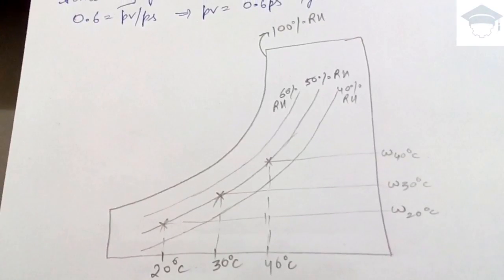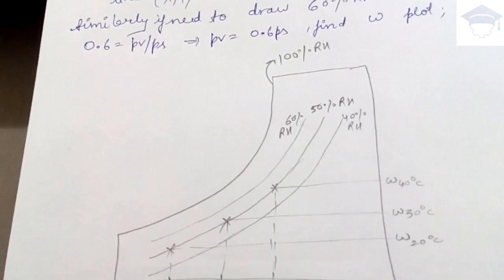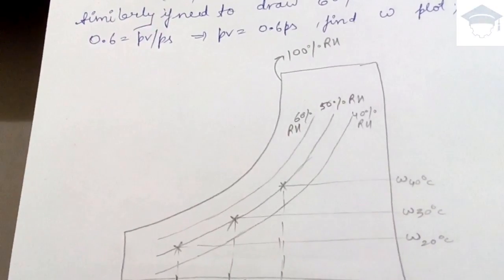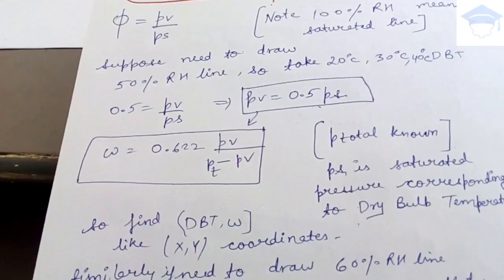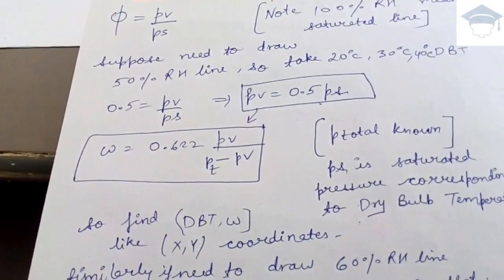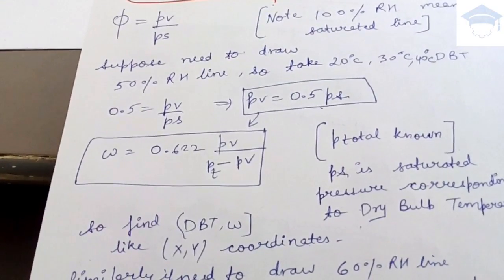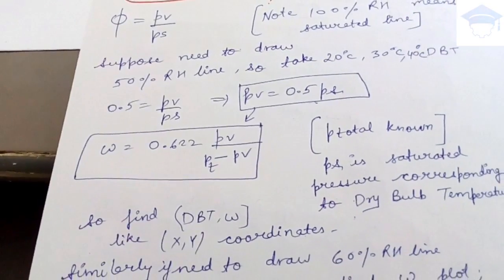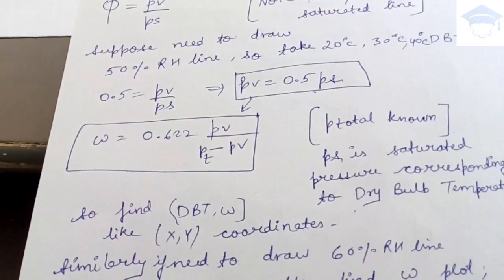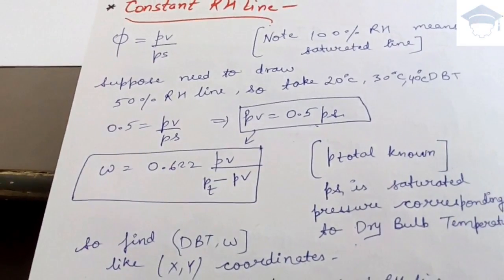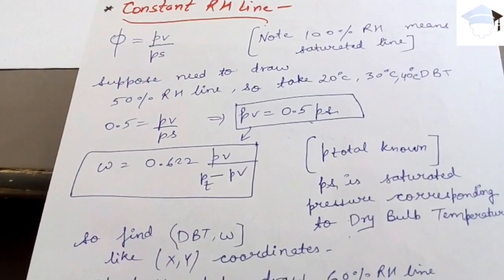To summarize: to draw a 50% RH line, take three dry bulb temperatures. For each temperature, use 0.5 = PV / PS to find PV = 0.5 × PS, where PS is the saturation pressure from the steam table at that temperature. Then use ω = 0.622 × PV / (P_total − PV) to find omega. Move up from the dry bulb temperature and left from the omega value — their intersection is one point.